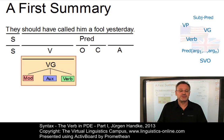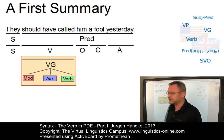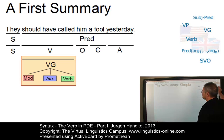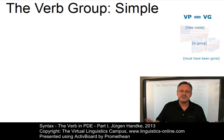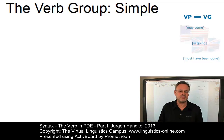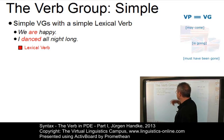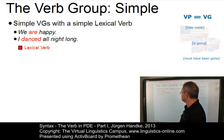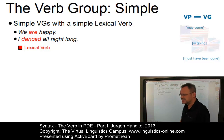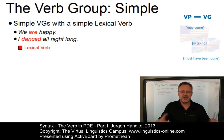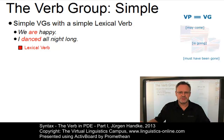Verb groups can be more or less complex. In its simplest form, a verb group exhibits one lexical verb only. For example, 'We are happy', where are is the lexical verb, and 'I danced all night long', where dance is the lexical verb. These lexical verbs are verb groups consisting of one verb.